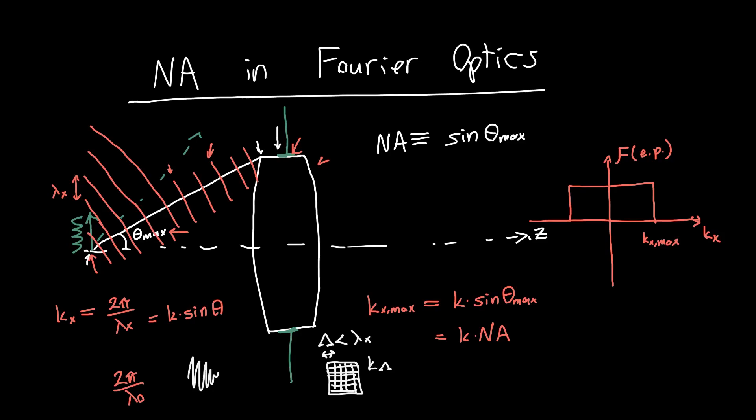Then the spatial frequency that this corresponds to, let's call this k_λ, this is going to be greater than our maximum cutoff frequency. And so this pattern we're not going to be able to transmit; all the high frequency stuff is going to get blocked by this aperture.